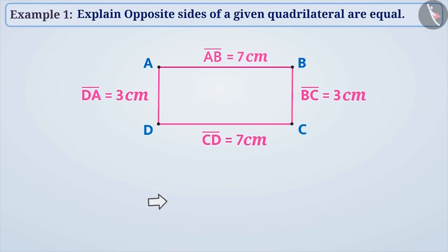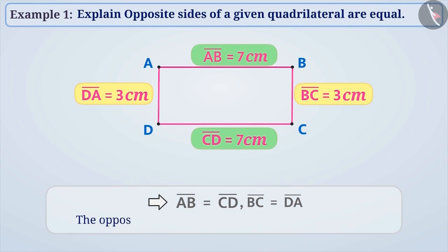Looking at the measurements, we can say that AB is equal to CD and BC is equal to DA. That is, the opposite sides of the given quadrilateral are equal.